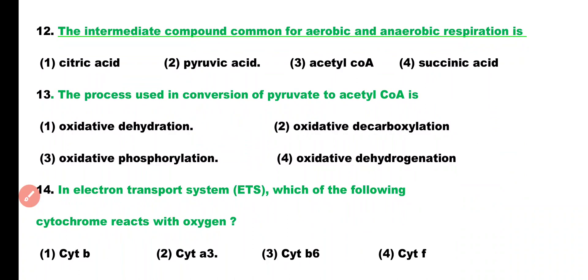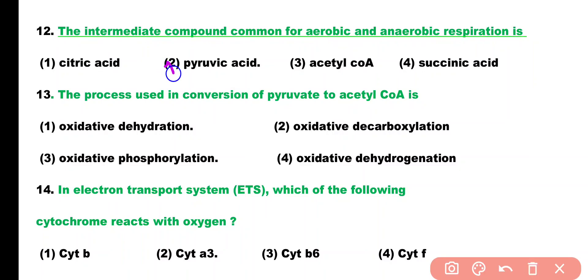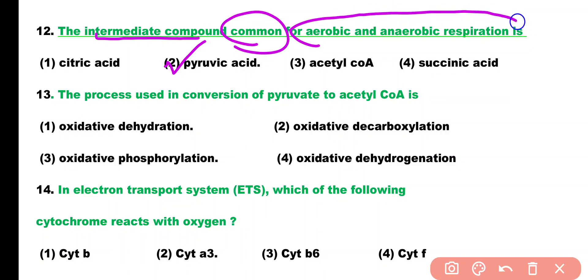Question number 12. The intermediate compound common for aerobic and anaerobic respiration is: citric acid or pyruvic acid. Pyruvic acid is the intermediate compound common for both aerobic and anaerobic respiration, because pyruvic acid is produced at the end of glycolysis, which takes place in both types of respiration.